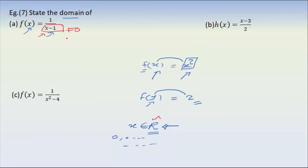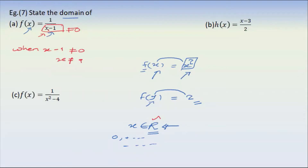So we have to write 1/(x-1). We write 0. When x minus 1 is equal to 0, then x is equal to 1, so x is not equal to 1. So x is not equal to 1. We have the domain.